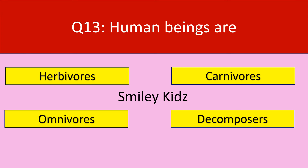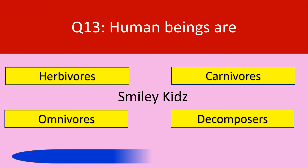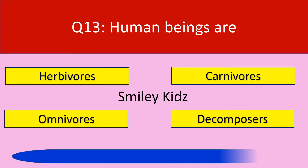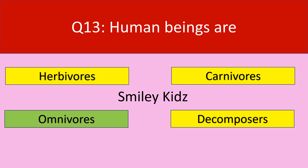Question number 13. Human beings are. Options are herbivores, carnivores, omnivores, and decomposers. Your time starts now. The correct answer is omnivores. Human beings are omnivores.